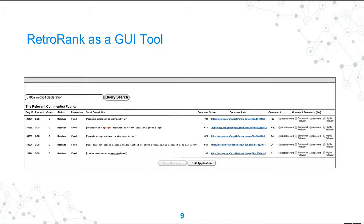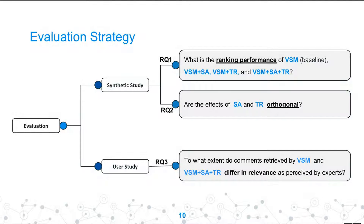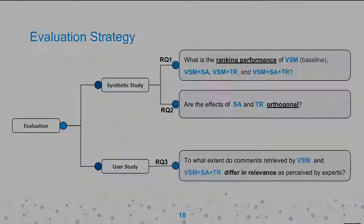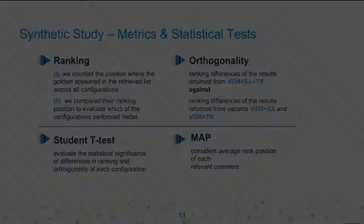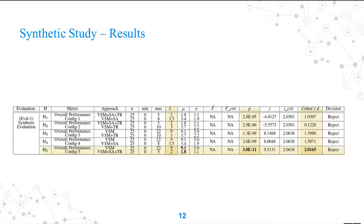I implemented a GUI-based application to provide a user-friendly tool for developers. I conducted two different studies: a synthetic study comparing all variations of techniques and examining the orthogonality of sentiment analysis and TextRank, and a user study conducted with a larger number of participants. For the synthetic study, the metrics used were ranking, personality, Student's t-test, and MAP.